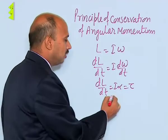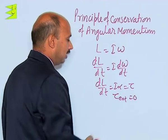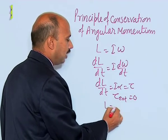If external torque is equal to zero in an isolated system, then we can write L is equal to constant.